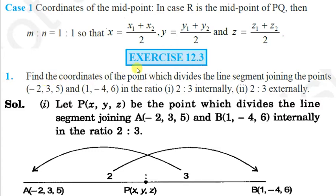Find the coordinates of the point which divides the line segment joining the points (-2, 3, 5) and (1, -4, 6) in the ratio 2:3 internally and externally.